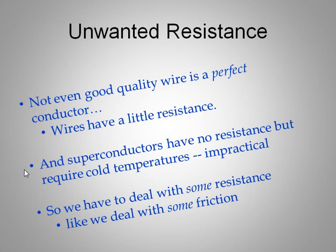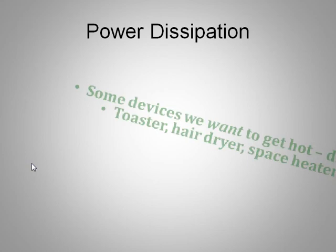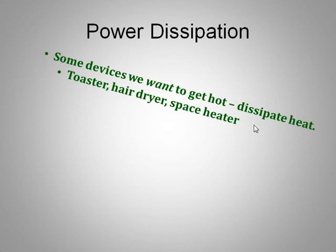So we just have to deal with some resistance. This leads us into power dissipation. Granted, some devices we want to have power dissipation — we want to have some resistance. For example, toasters: you wouldn't want a superconducting toaster. You want resistance because it's the resistance that causes the heat. Likewise, a hair dryer, or the heater that you plug in and keep under your desk to keep your feet warm in the winter.